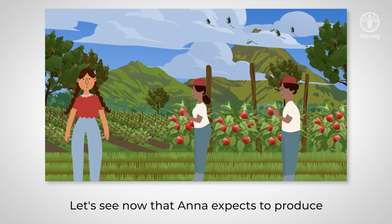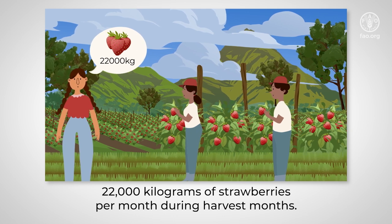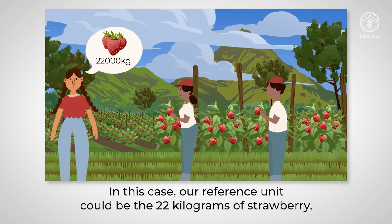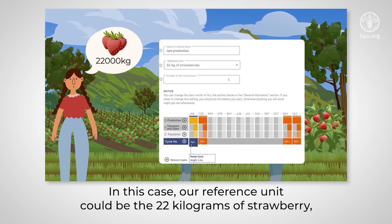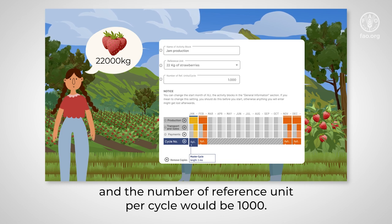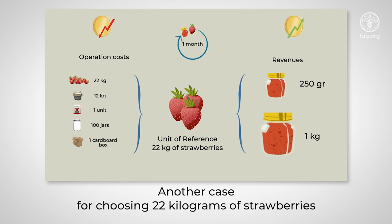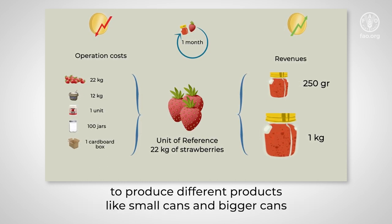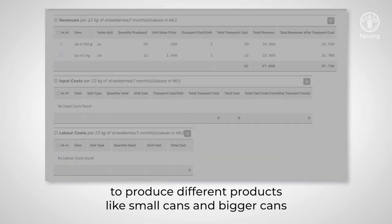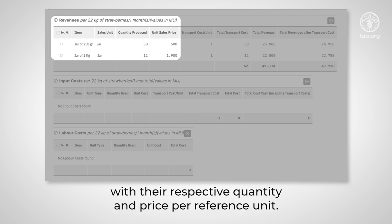Let's assume now that Anna expects to produce 22,000 kilograms of strawberries per month during harvest months. In this case, our reference unit could be 22 kilograms of strawberry, and the number of reference units per cycle would be 1,000. Another case for choosing 22 kilograms of strawberries as a reference unit could be if Anna would expect to produce different products like small cans and bigger cans. She will have in this case two units of sale with their respective quantity and price per reference unit.